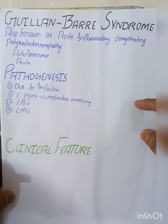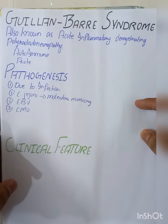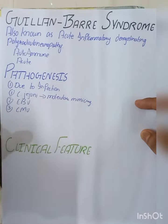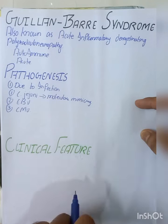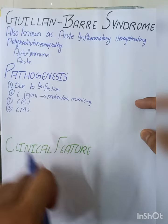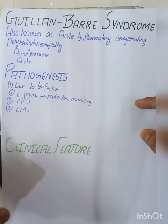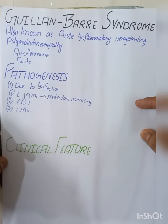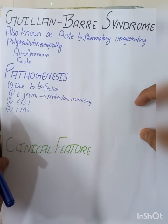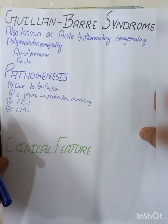Guillain-Barré syndrome involves the peripheral nerves, not the central nervous system — not the brain or spinal cord. It mainly involves the nerve roots and the peripheral nerves which go towards the limbs.